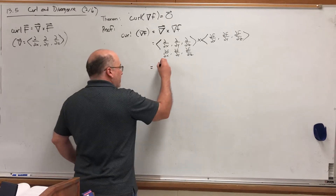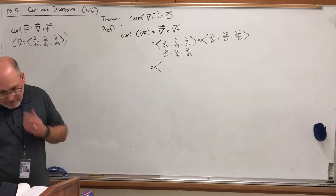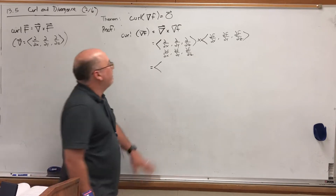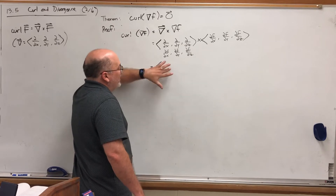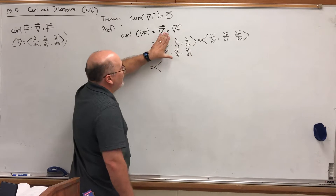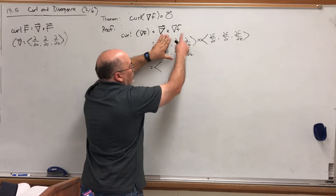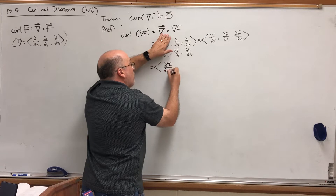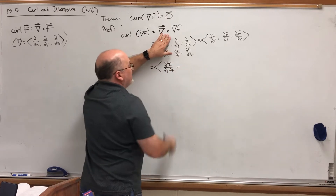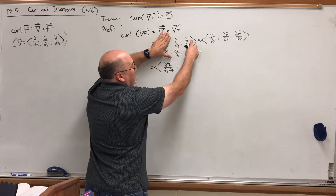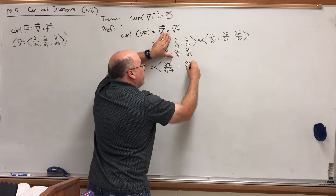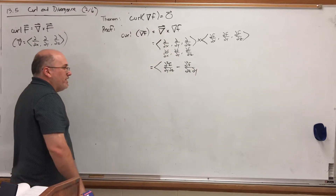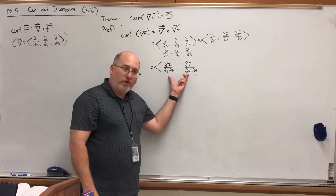Don't forget the middle component has a negative in front. We're taking partial derivatives of partial derivatives, so stay very focused. For the x-component of the curl, cover up the x components. Partial with respect to y of the partial with respect to z — that would be the second partial of f with respect to y and then z — minus the other direction: partial with respect to z of the partial with respect to y. So the second partial derivative where we take partial z first, followed by partial y. You may notice that these two mixed partial derivatives are equal according to Clairaut's theorem.